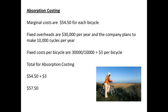Now for absorption costing. Overheads of $30,000 per year with 10,000 cycles made each year gives overheads of $3 per bicycle. We add these to the cost already calculated for materials and labour: $54.50 plus $3, which gives an answer of $57.50.